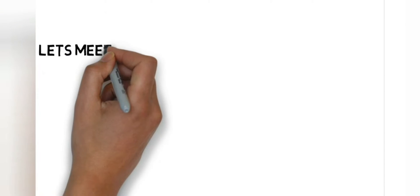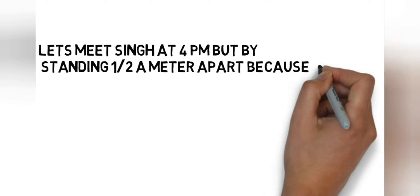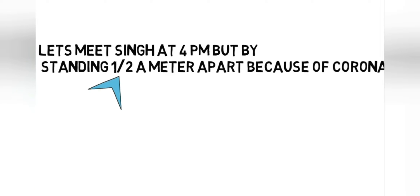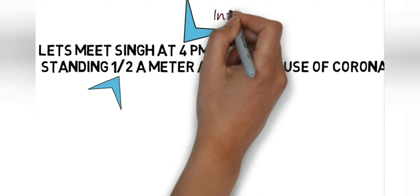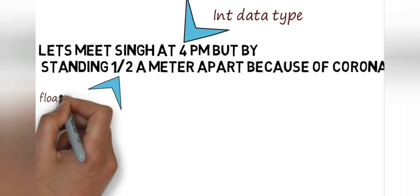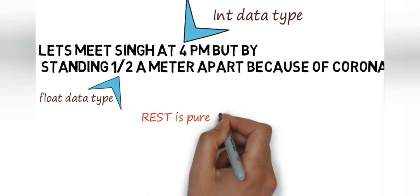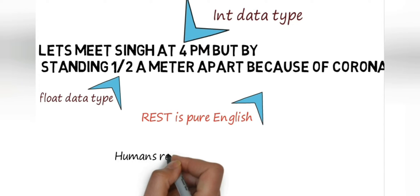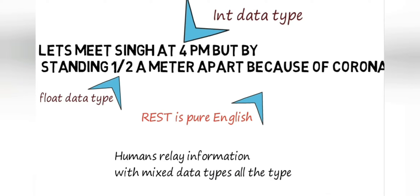What you see on your screen is a sentence that says 'let's meet Singh at 4 p.m. but by standing half a meter apart because of corona.' Here we have made a sentence by combining four, which is an int type, then we have pure English as well, and then we have half, which is a fraction — that's going to result in a float data type. That's how we relay information by combining different data types.